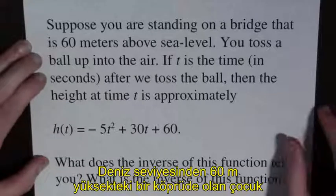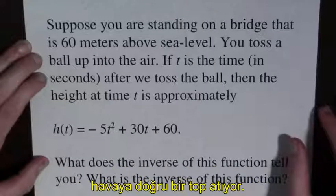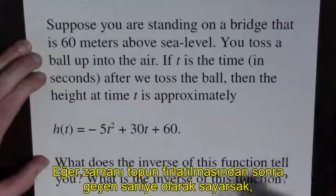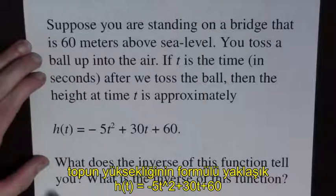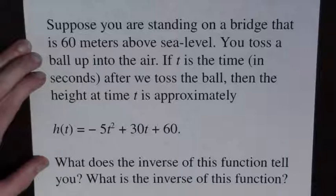Suppose you are standing on a bridge that is 60 meters above sea level. You toss a ball into the air. If t is the time in seconds after we toss the ball, then the height at time t is approximately h(t) equals minus 5t squared plus 30t plus 60. What does the inverse of this function tell you?